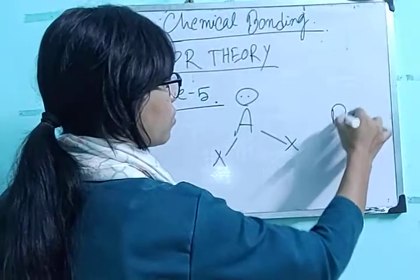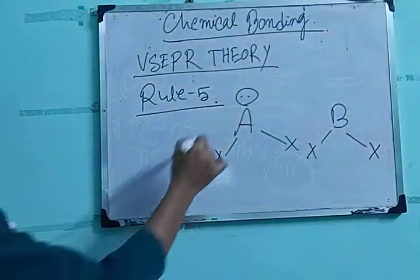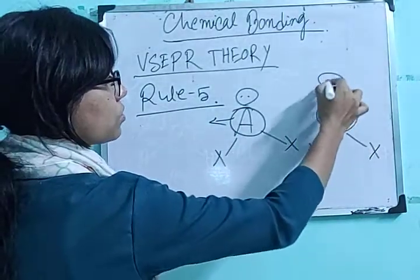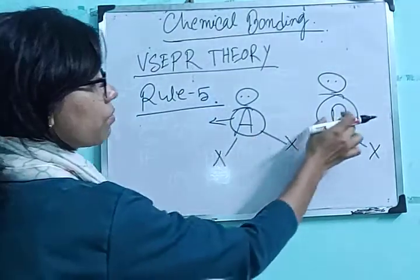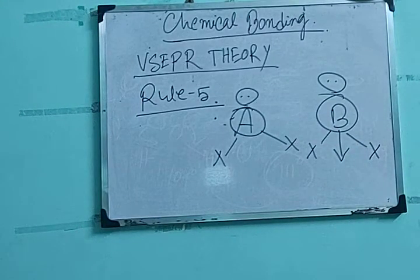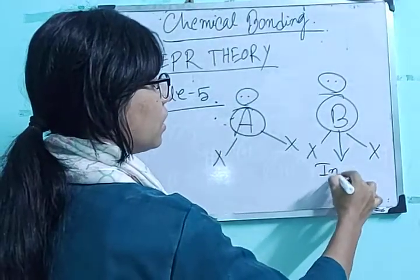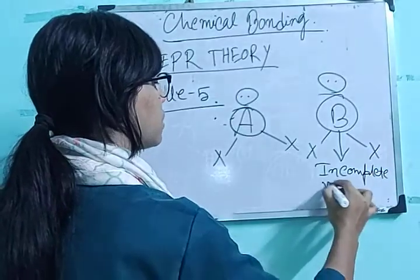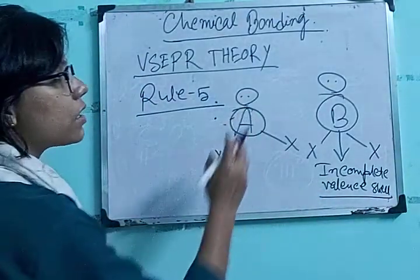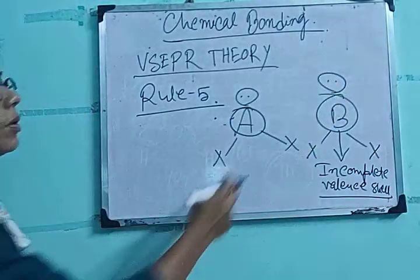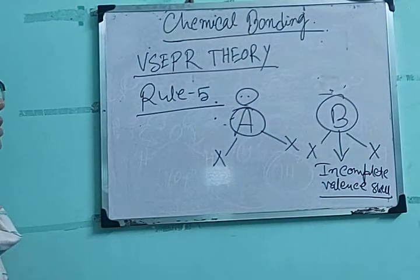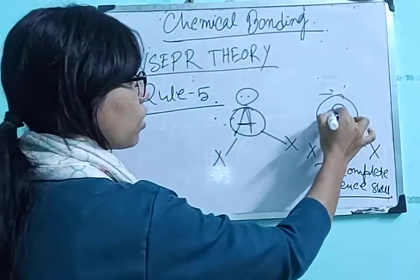Suppose this one is AX2 and this one is BX2. For central atom A, the valence shell also has lone pair of electrons. If I compare the valence shell electrons of A and B, and if I say that for B the valence shell is not fulfilled — so central atom B has an incomplete valence shell — then the occupation of space by this lone pair of electrons will be more in this case. So though both AX2 and BX2 have similar geometry, the difference is in the nature of the central atom.